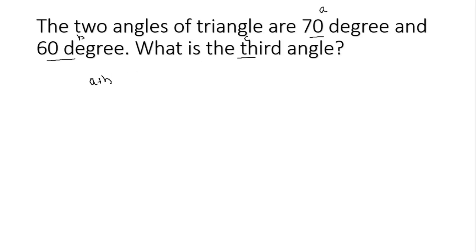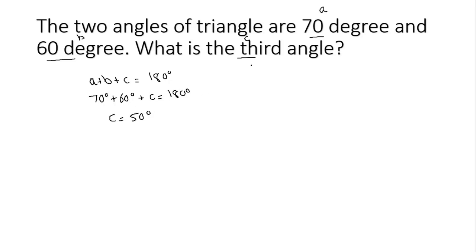We know that the sum of the angles of a triangle is equal to 180 degrees, which means that 70 degrees plus 60 degrees plus C must be equal to 180 degrees. Solving this, we get C is equal to 50 degrees. So the third angle is 50 degrees, using the fact that the sum of angles of a triangle is 180 degrees.